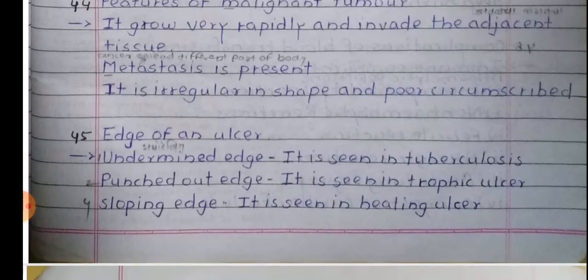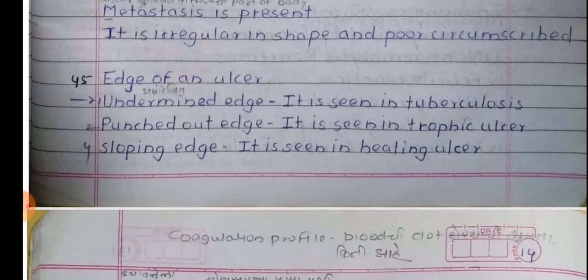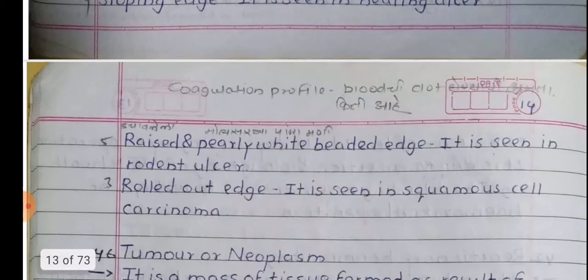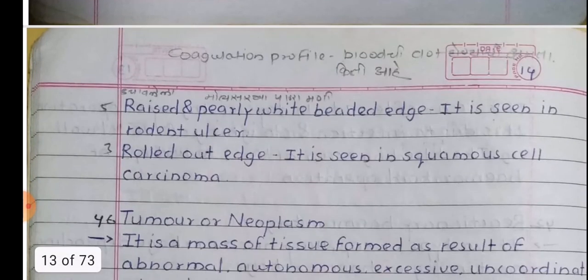Edge of an ulcer: Undermined edge — seen in tuberculosis. Punched out edge — seen in trophic ulcers. Sloping edge — seen in healing ulcers. Raised and pearly white beaded edge — seen in rodent ulcer. Rolled out edge — seen in squamous cell carcinoma.